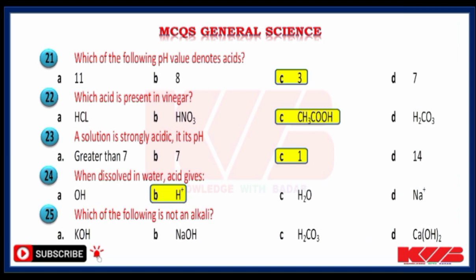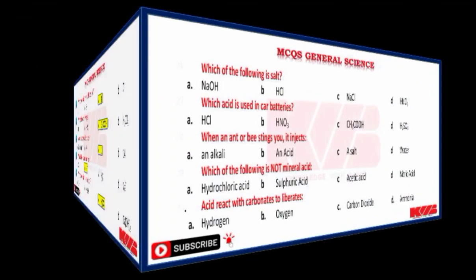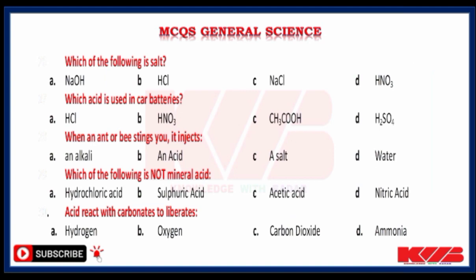Which one of the following is not an alkali? KOH, NaOH, H2CO3 or Ca(OH)2? Yes, H2CO3. Which one of the following is a salt? NaOH, HCl, NaCl or HNO3? Yes, NaCl. Which acid is used in car batteries? HCN, HNO3, CH3COOH or H2SO4? Yes, H2SO4.